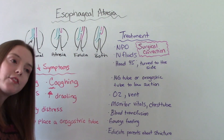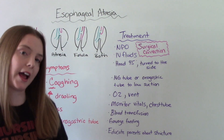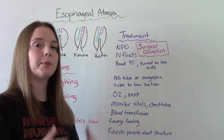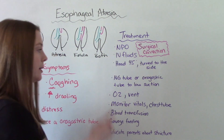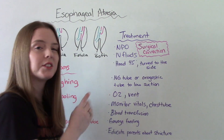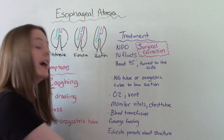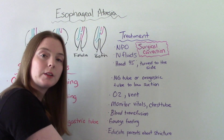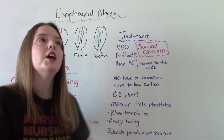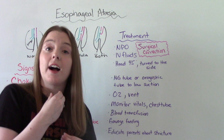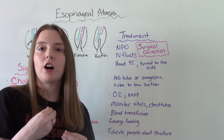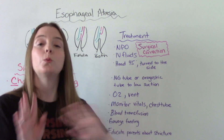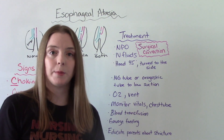A few days after surgery — around two to three days — when they start to do better, we can start giving them gavage feedings, meaning feeding them through those tubes. We're still not doing regular feedings yet. It's important to educate parents about the possibility of a stricture, which is a narrowing of the esophagus that can cause dysphagia and put them at aspiration risk — we don't want any of that to happen to these babies.